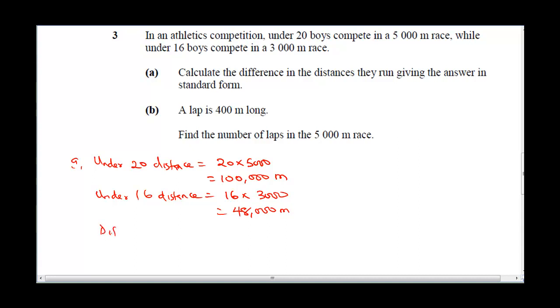The difference in distance is going to be 100,000 subtract 48,000, which gives 52,000 meters. Now to convert 52,000 to standard form, you move your decimal places one, two, three, four, so it's going to be 5.2 × 10⁴ meters. This is my final answer in standard form.